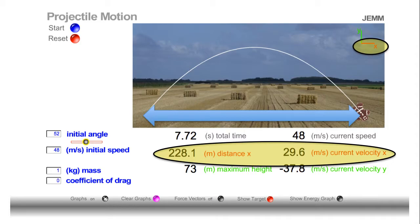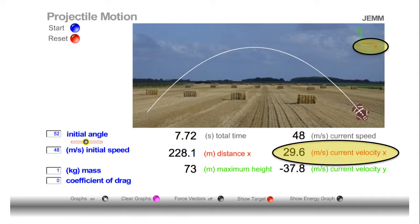There is a row of data that you'll notice that's related to the X direction. 228.1 meters refers to the distance the object has traveled from where it started. Also notice that 29.6 meters per second refers to the current velocity in the X direction.